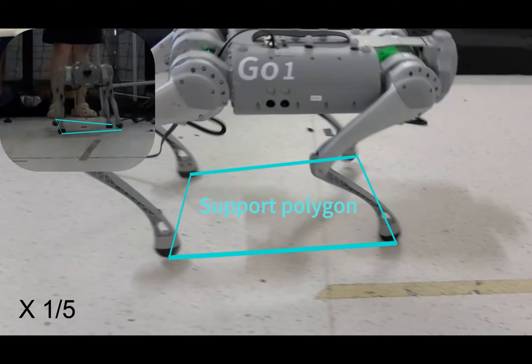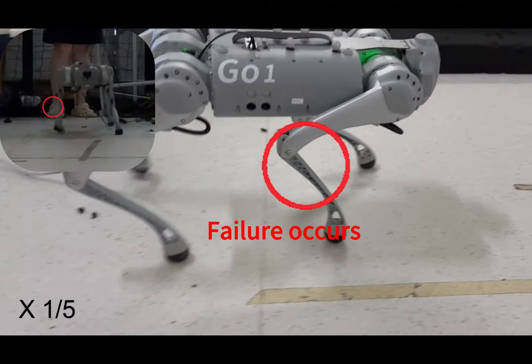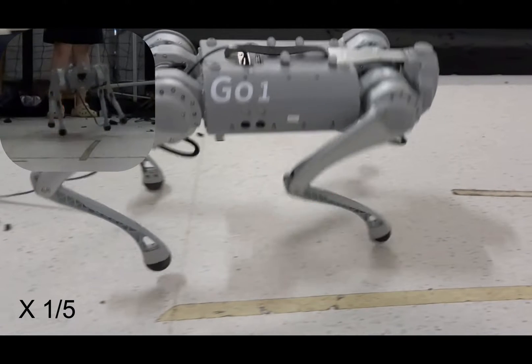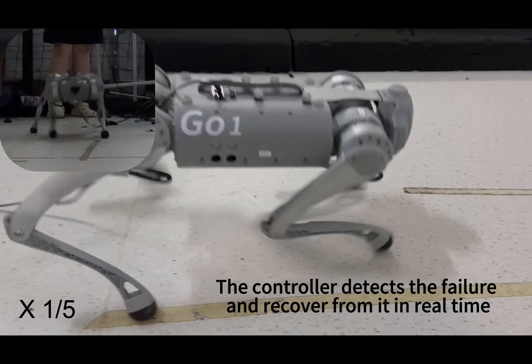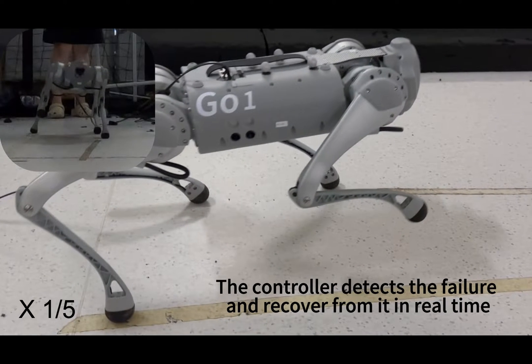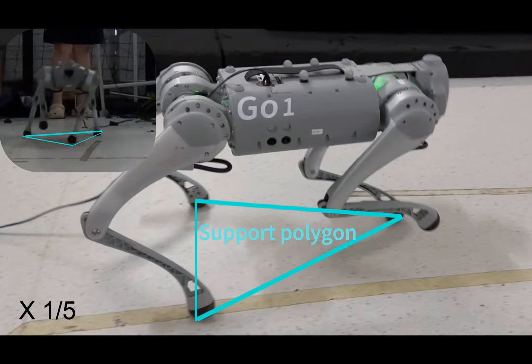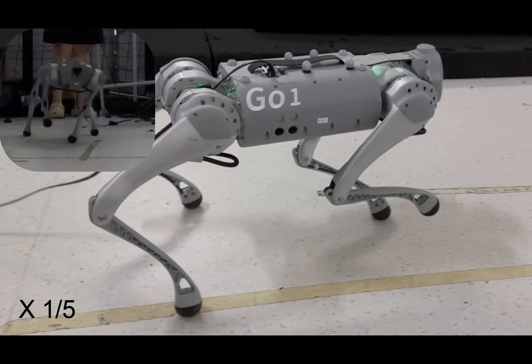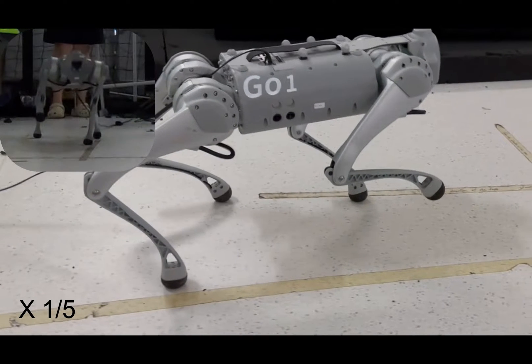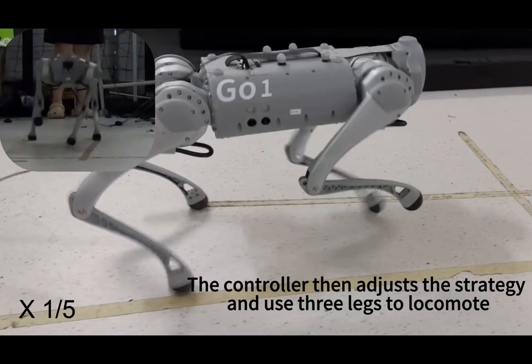In the dynamic test, the robot initially walks using all four legs in its normal state. Once the motor is completely damaged, the robot first falls down due to zero strength. Then adaptive controller identifies the abnormal state and recovers from the failure rapidly. With the support polygon being a triangle, the controller is dynamically adjusted online to enable locomotion using only three legs.